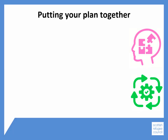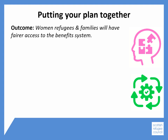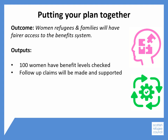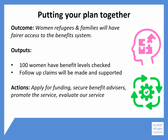Now let's look at putting your plan together. In the example we've just looked at, the outcome was that women refugees and their families will have fairer access to the benefit system. Outputs included that 100 women will have benefit levels checked and follow-up claims will be made and supported to increase their income. The actions needed include applying for the funding, arranging for benefit advisors to give advice, promoting the service to the women, and evaluating their experience and how it has helped them. To get all this done, we also need to look at who will do what and when.